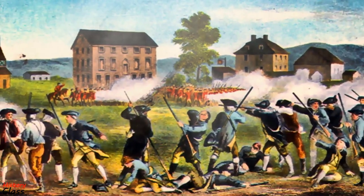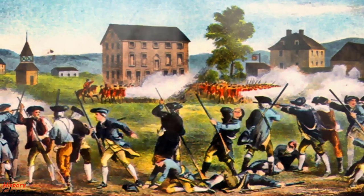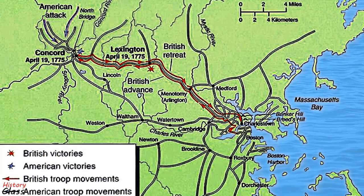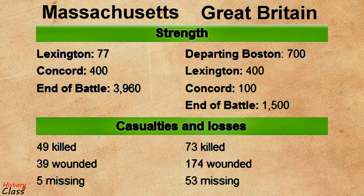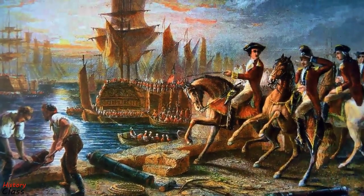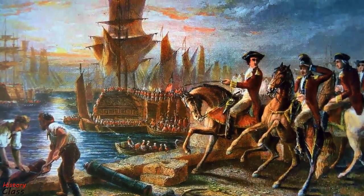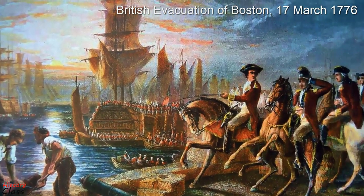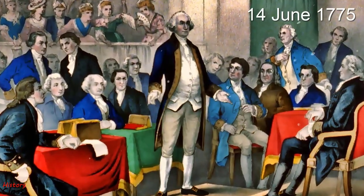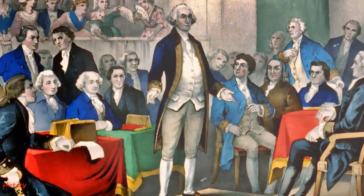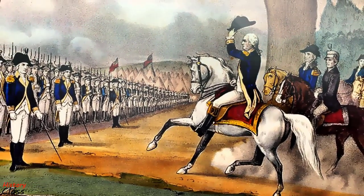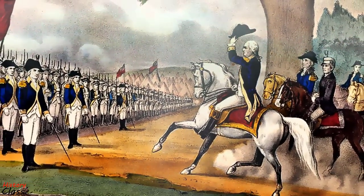Twelve colonies formed a Continental Congress to coordinate their resistance and establish committees and conventions that effectively seized power. British attempts to seize the munitions of Massachusetts colonists in April 1775 led to the first open combat between Crown forces and Massachusetts militia — the Battles of Lexington and Concord — on 19 April 1775. Militia forces proceeded to besiege the British forces in Boston, forcing them to evacuate the city in March 1776. The Continental Congress appointed George Washington to take command of the militia, and later as Commander-in-Chief of the newly formed Continental Army, as well as coordinating state militia units.